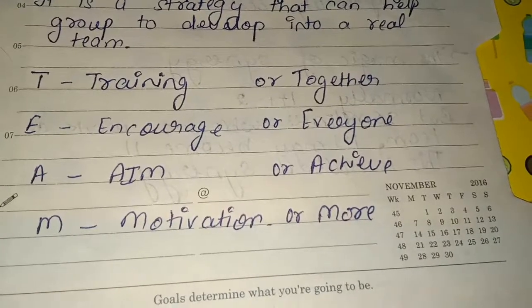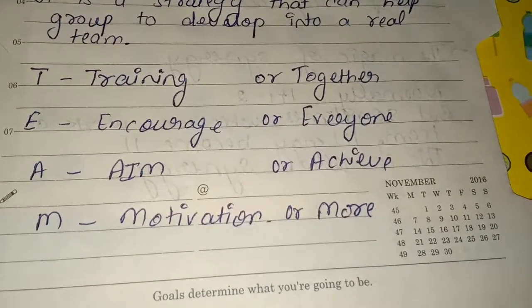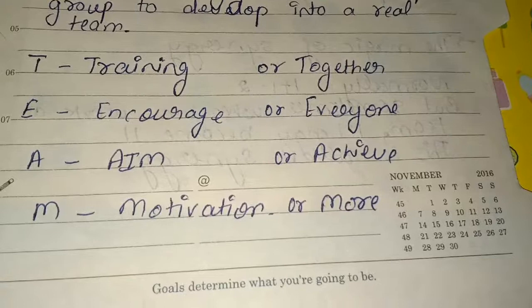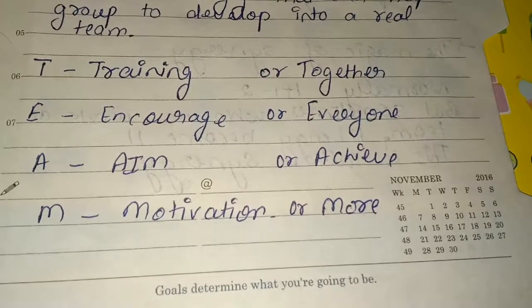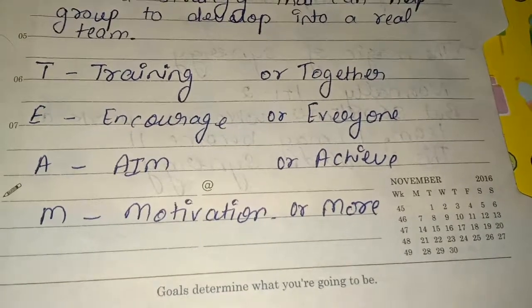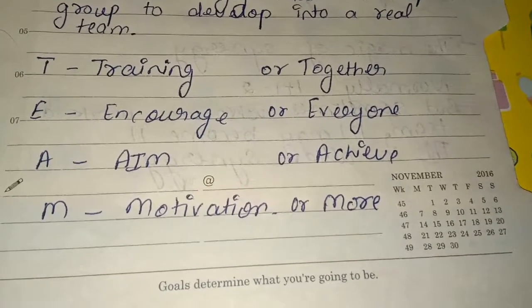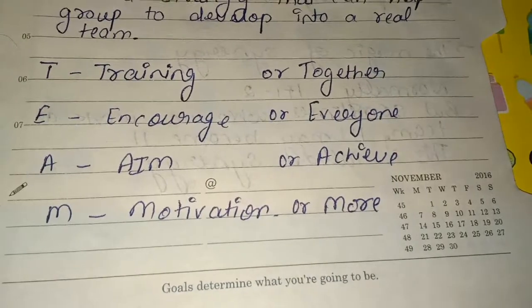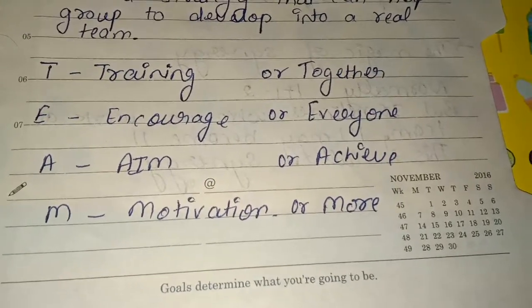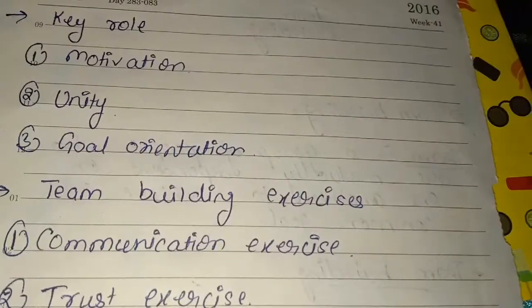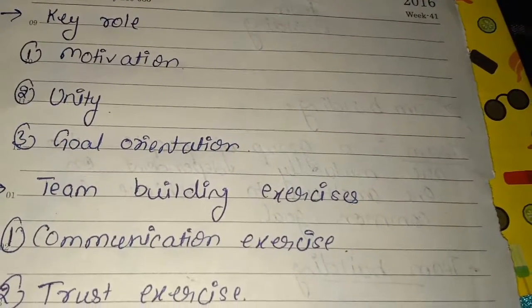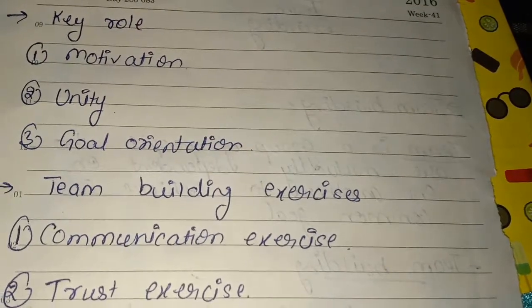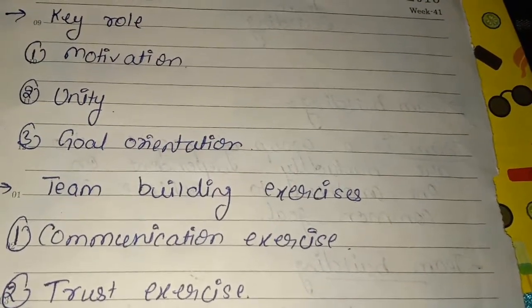M is for Motivation — because of the team, we get motivation which is very beneficial for the organization. The full form of TEAM is also: Together Everyone Achieves More. When everyone works together, they achieve more. Team building has three main key roles: Motivation, Unity, and Goal Orientation.